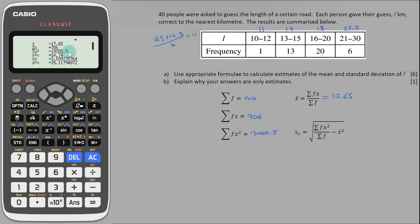Now I want to show enough method to make sure I get all of the available marks so I'm going to sub these three values into the standard deviation formula. So 13,050.5 divided by sigma f which is 40 minus the square of the mean so 17.65 squared.